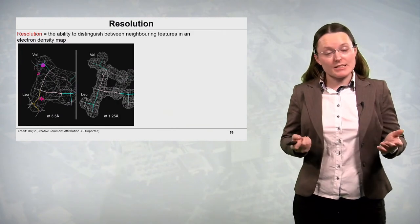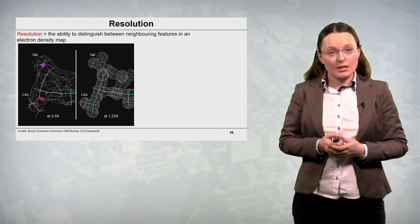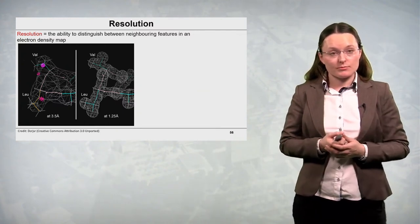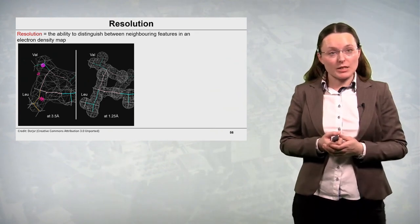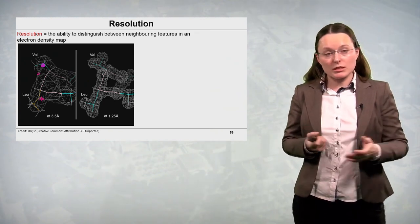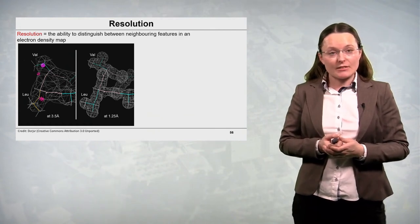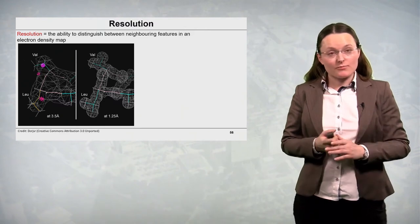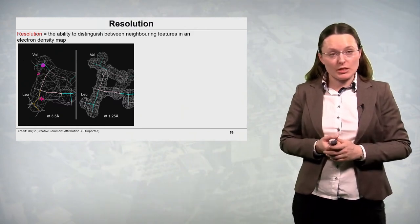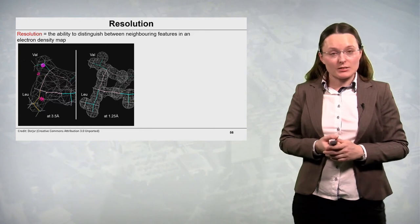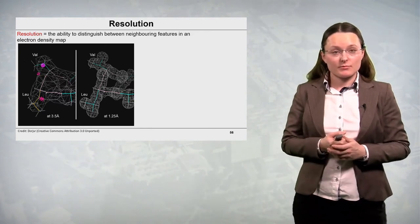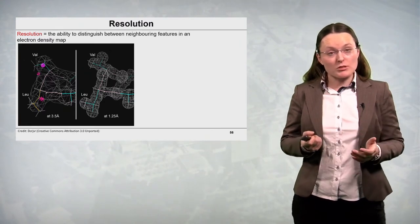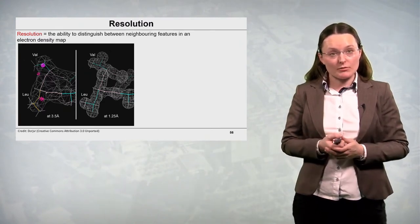And this is an example from protein crystallography where we have data collected at different resolution. On the left hand side there is fragment of protein moiety which is investigated at 3.5 angstroms resolution. We cannot resolve too much from this picture. But on the right hand side the resolution is at 1.25 angstroms. And we can already resolve individual carbon atoms from each other.